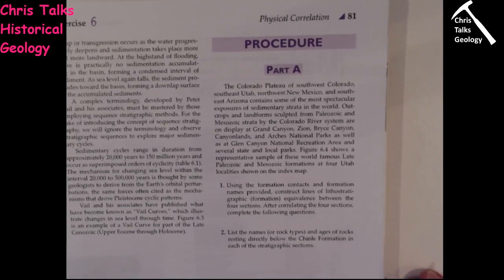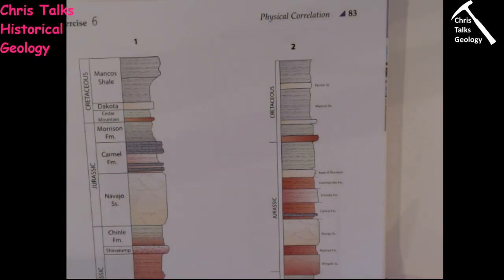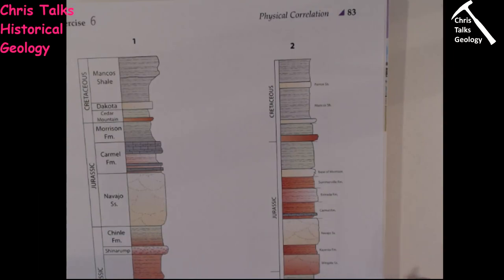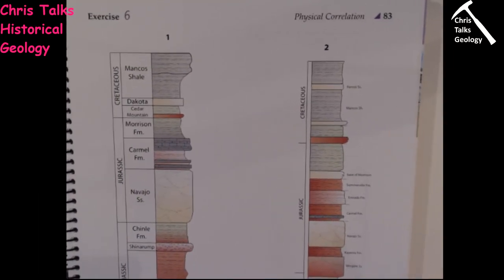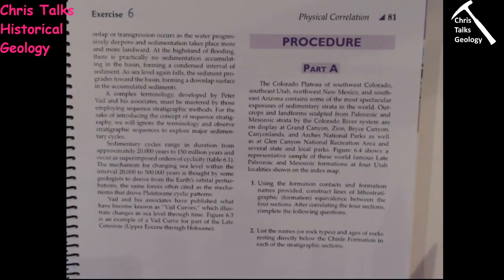Part A requires you to use four stratigraphic columns. Exercise 6 is a very mark-heavy exercise — you'll get a lot of marks for it. It's a high-value exercise, so please make sure you do it and do it well, because this is worth more than some of the other exercises. Not all exercises are created equal.